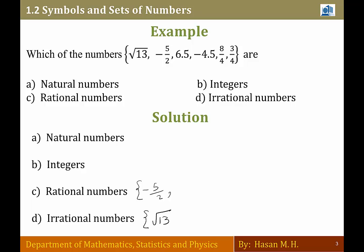6.5: I can write it as 6.5, which is not an irrational number but a rational number. 6.5 is rational, but it is not an integer and it is not a natural number.